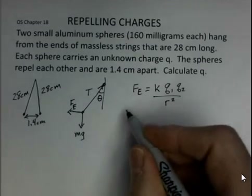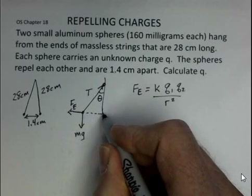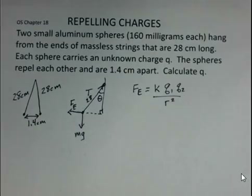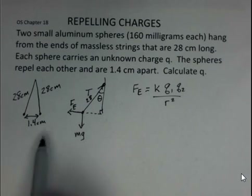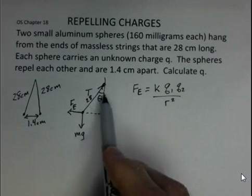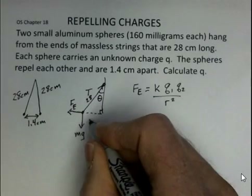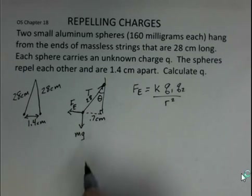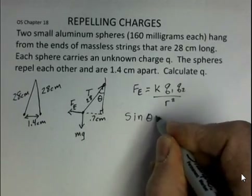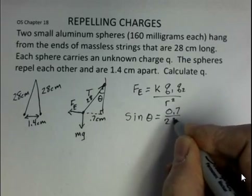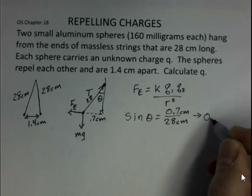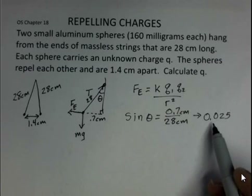Let's do that first. Here is a right triangle and we know that we've got 28 centimeters along the distance of the string. The dotted line comes straight down from the anchor point, so there is 0.7 centimeters from the center to one sphere, since 1.4 centimeters is divided in half. We have knowledge of the side opposite to the angle and the hypotenuse, so we use sine. Sine of theta equals 0.7 over 28 centimeters. Dividing those two numbers gives 0.025, so the sine of theta equals 0.025.